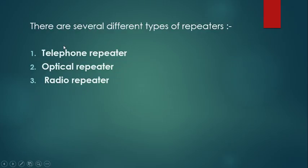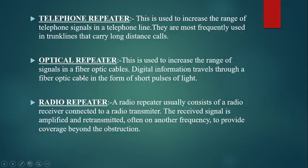Here are some of the actual repeaters. First is the telephone repeater, then optical repeater, and then radio repeater. If a telephone signal is getting lost and to increase the signal strength or call strength, telephone repeaters are used. They are most frequently used in trunk lines, which are helpful in carrying long-distance calls.